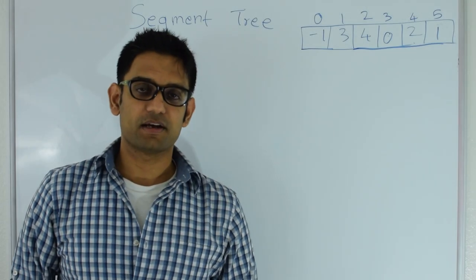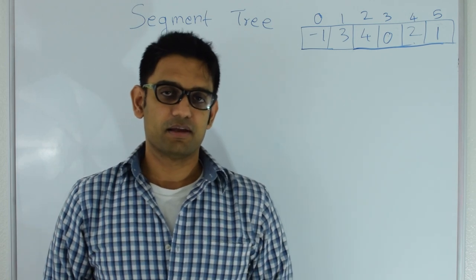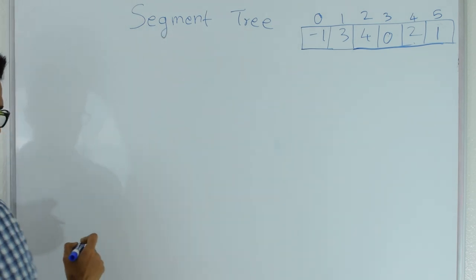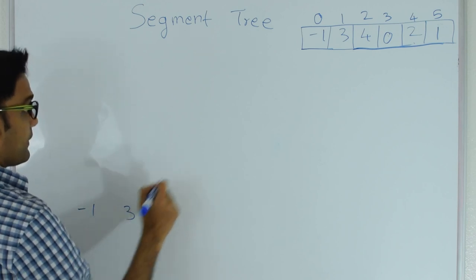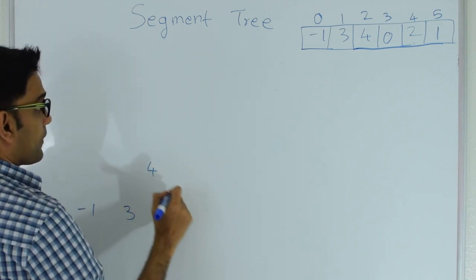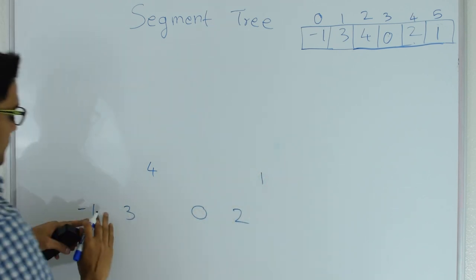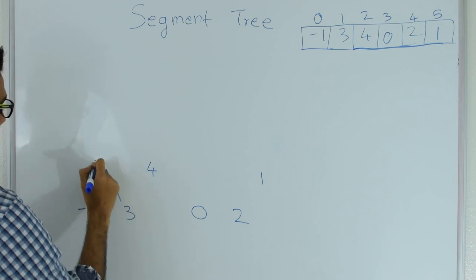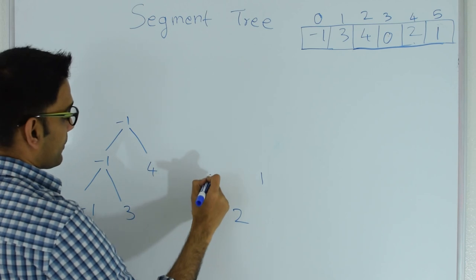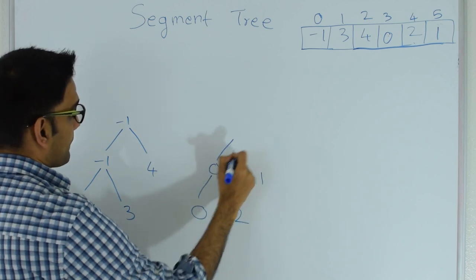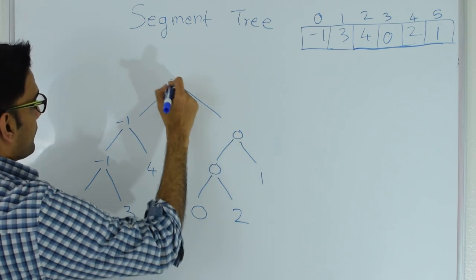A Segment Tree is a binary tree, and the elements of the array will be the leaves of that binary tree. So these elements are the leaves — I'll write them at the bottom: minus 1, 3, 4, 0, 2, 1. The minimum of minus 1 and 3 is minus 1. The minimum of minus 1 and 4 is minus 1. The minimum of 0 and 2 is 0. The minimum of 0 and 1 is 0, and then the minimum of minus 1 and 0 is minus 1.